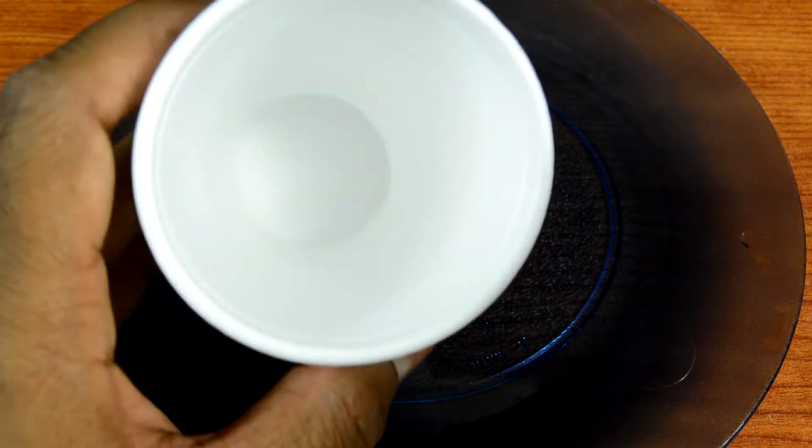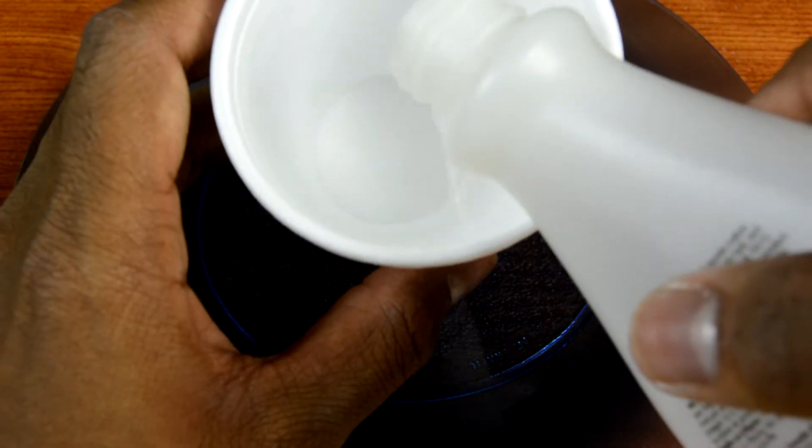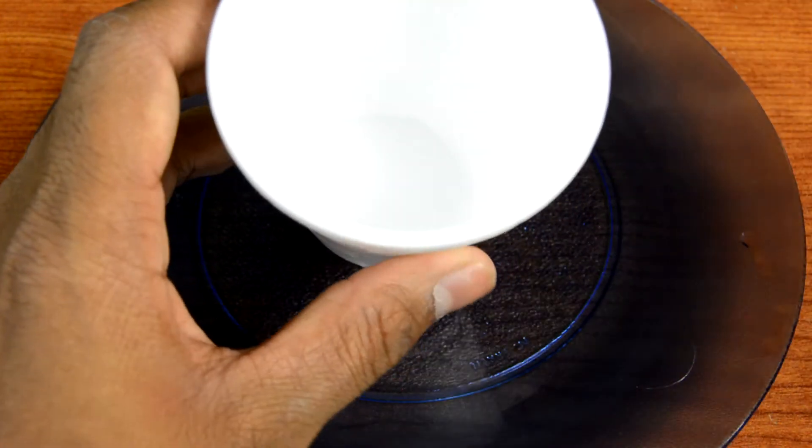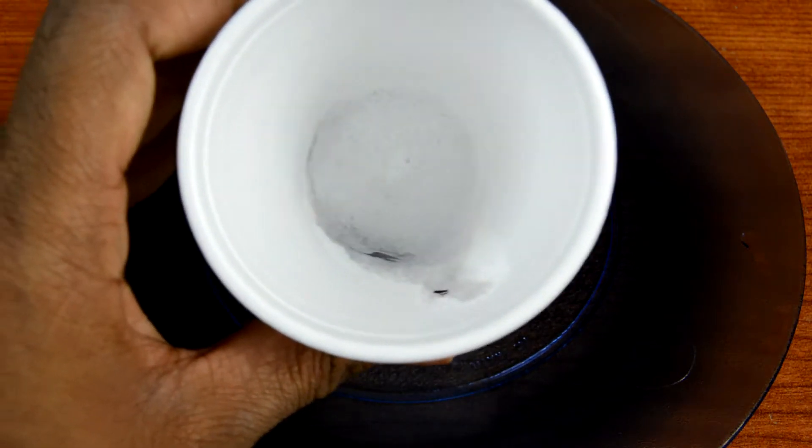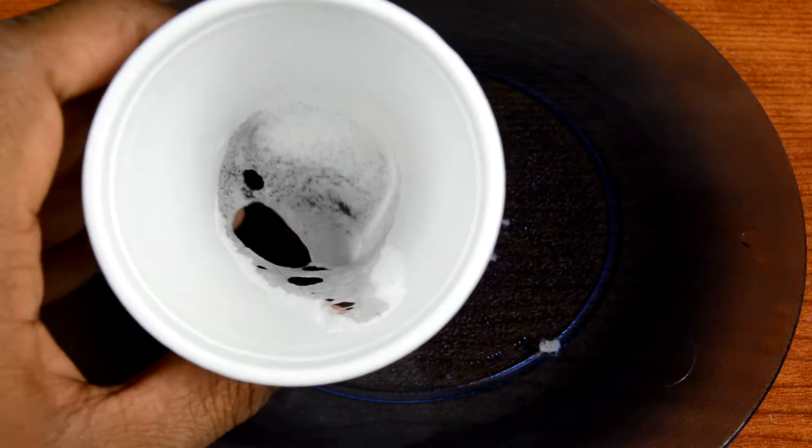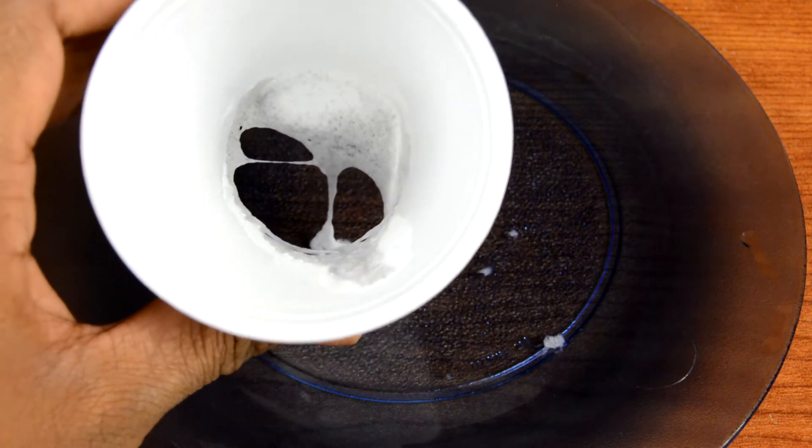This time I'm gonna pour the acetone into the styrofoam cup. As you can see, it just eats away at the cup and almost instantly forms a hole right through it. Now this styrofoam cup cannot be used.